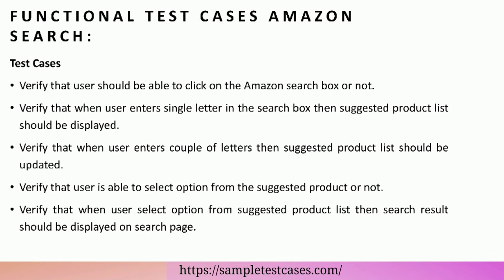Functional Test Cases for Amazon Search. Verify that user should be able to click on the Amazon search box or not. Verify that when user enters a single letter in the search box then suggested product list should be displayed. Verify that when user enters a couple of letters then suggested product list should be updated.